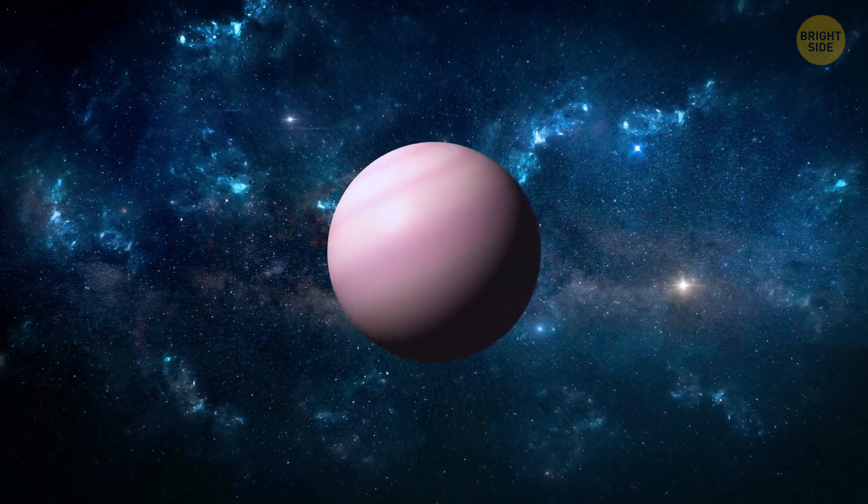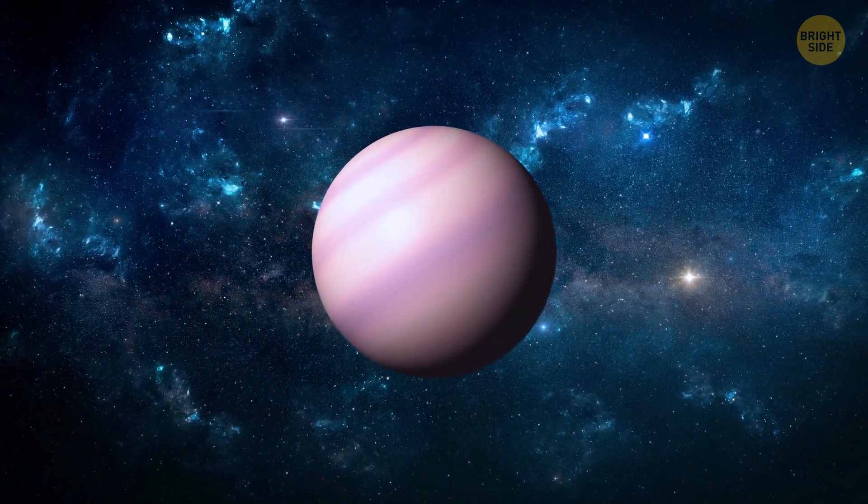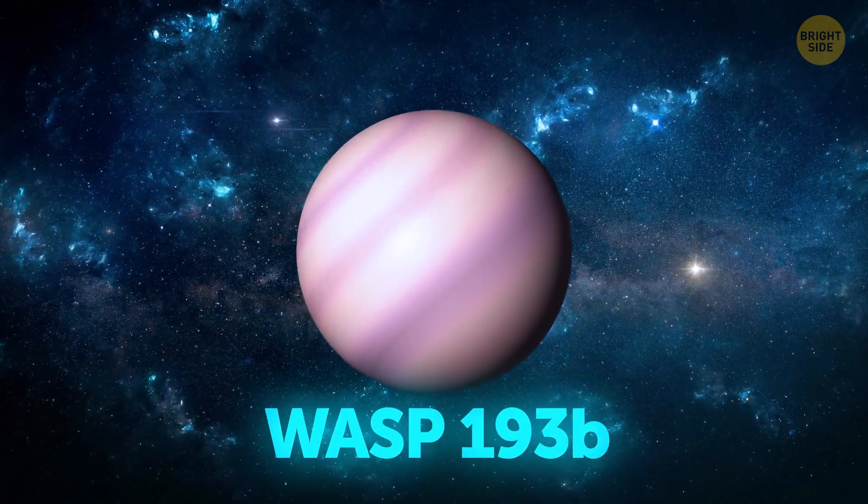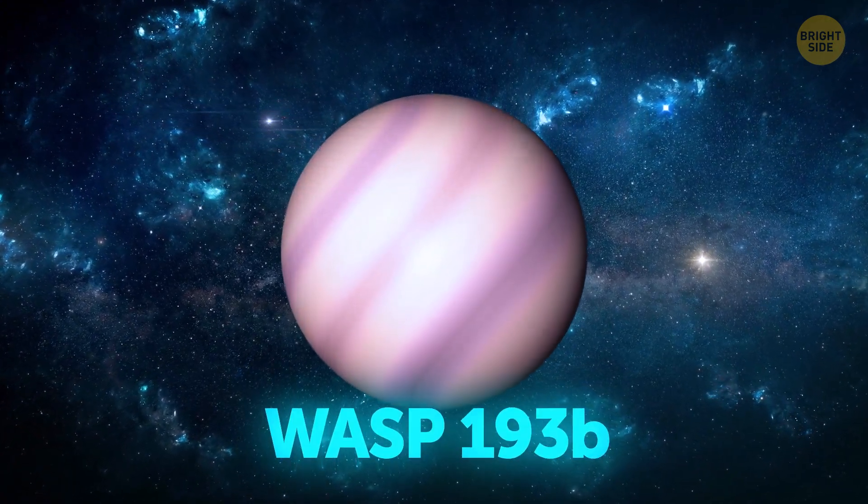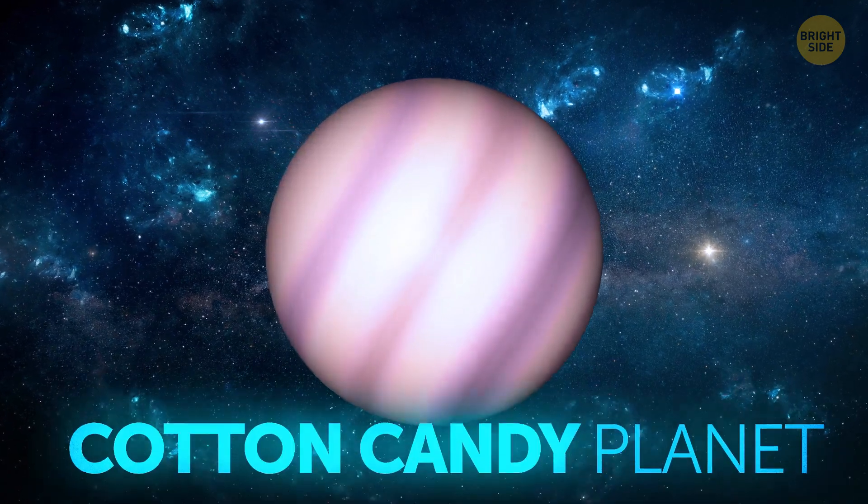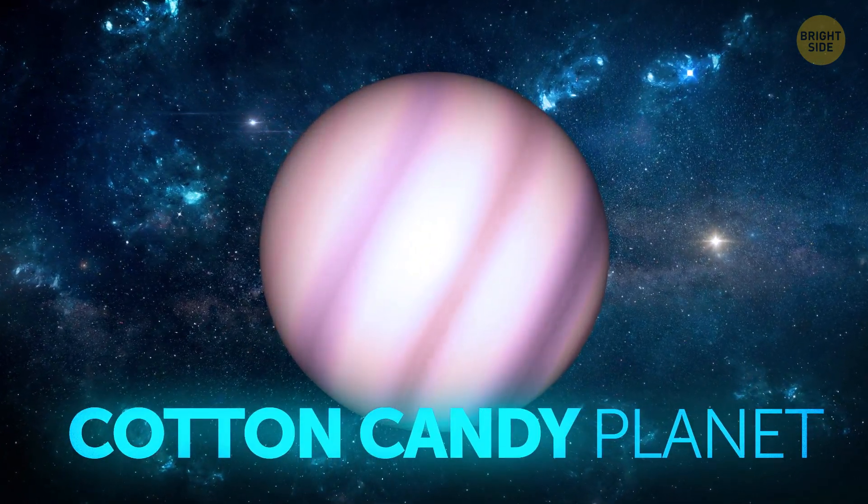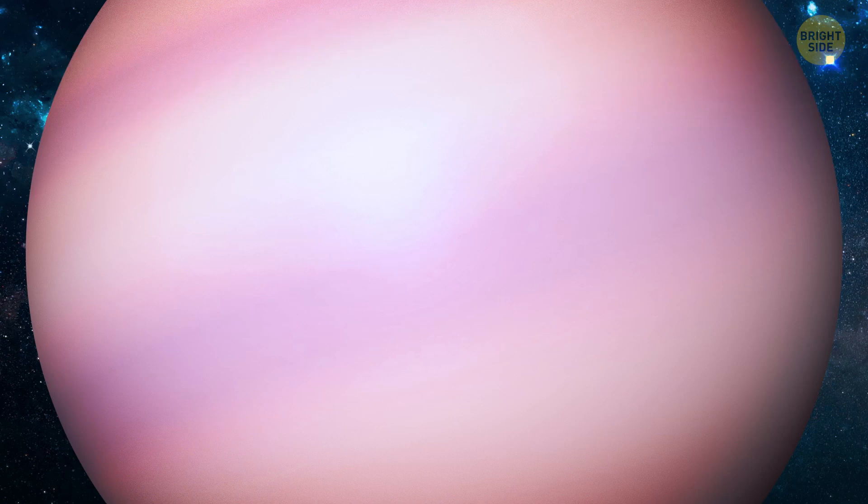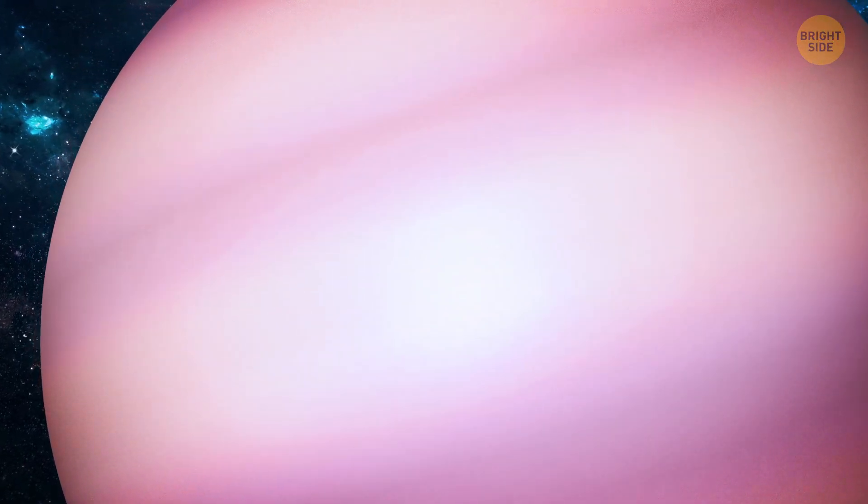This planet is as light as a piece of fluff stuck to your jacket. In the scientific world, its name is WASP-193b, but we'll call it the cotton candy planet. It's located around 1200 light-years from us. We'll never see it with our own eyes, but scientists say the cotton candy planet is pretty much Jupiter's bigger, bouncier cousin.